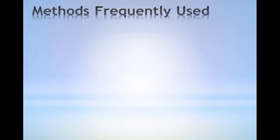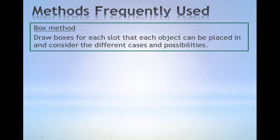Some of the methods that are frequently used in permutations of objects are the box method. In the box method, boxes are drawn for each slot that each object can be placed in and we will consider the different cases and possibilities from there.